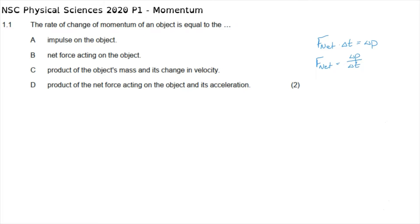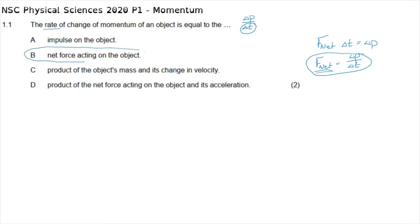This question asks for the rate of change of momentum, which refers to delta p over delta t. The rate of anything is always divided by the amount of time, so we are dealing with the second formula, which says that the rate of change of momentum of an object is equal to the net force — making option B the correct answer to 1.1.